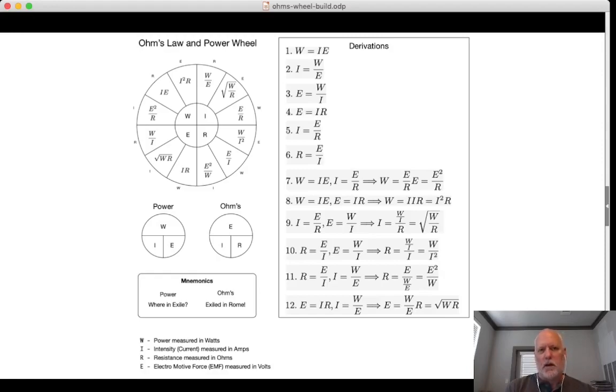We'll start very simply, but the acronym that's going to drive the whole thing is WIRE, W-I-R-E. W is watts, I is intensity, which is really the symbol for current measured in amps, resistance is measured in ohms, and E is what you may have usually seen as volts, but basically it's the electromotive force. Let's jump into creating the power wheel.